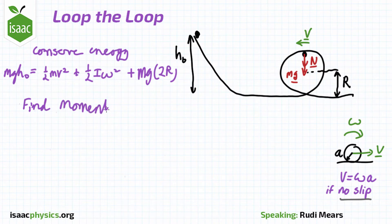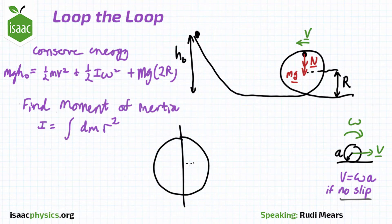We use the formula: I is the integral of dm times r squared. Don't forget that r is the perpendicular distance from the axis to some point on the sphere, not the distance from the centre of the sphere to some point on the sphere.